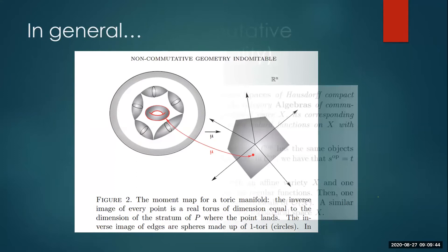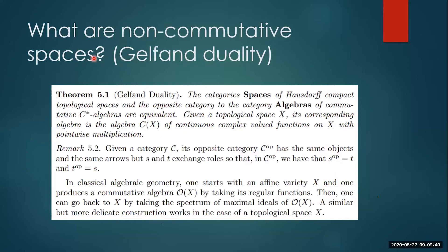But what is a non-commutative space anyway? To motivate non-commutative spaces, let's state Gelfand duality. It says that the category of Hausdorff compact topological spaces and the category of commutative C*-algebras are the same — more precisely, equivalent via a contravariant functor. To every space, the corresponding algebra is the algebra of continuous complex-valued functions with pointwise multiplication. This establishes an equivalence of these two categories.